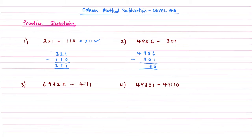9 subtract 3 is 6, and then 4 subtract nothing, if we remember we don't do anything with that, is just 4. So the answer for this one is going to be 4655.